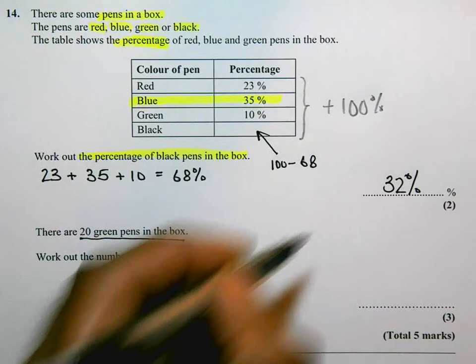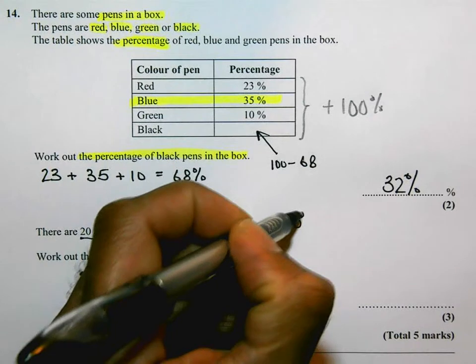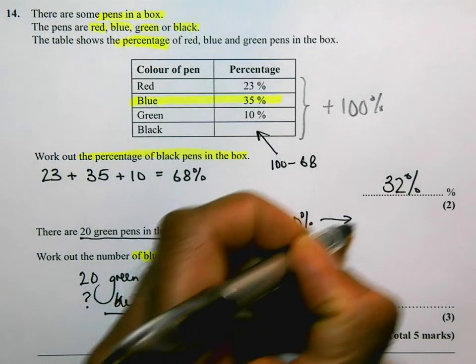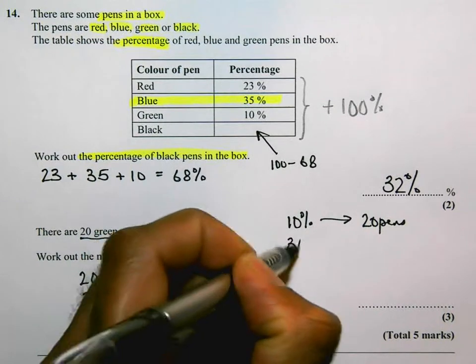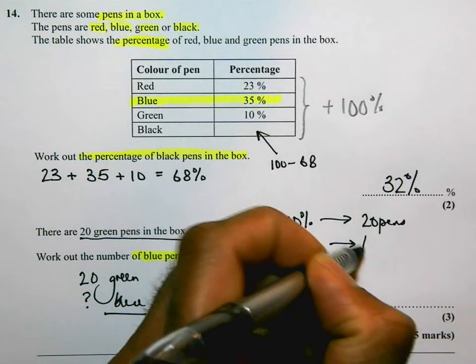Because if 10% stands for 20 pens, that means that 30% is going to be 3 lots of that, which is 60 pens.